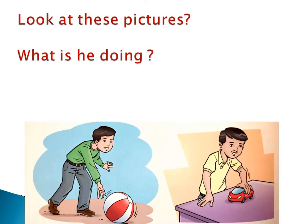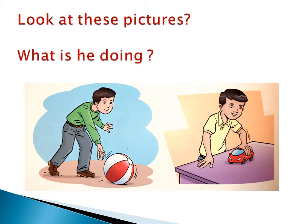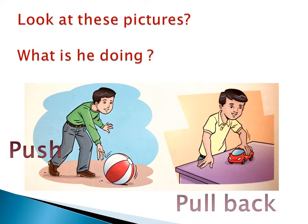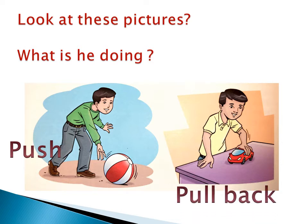Look at these pictures. What is he doing in the two pictures? In the first picture, the boy is pressing on the ball or touching the ball — he is moving the ball away from him. This is called push. And the second one — this is a toy called a pullback car. Most boys know this car. We have to pull it back and leave it, so it will move in the other direction. This is called pullback.